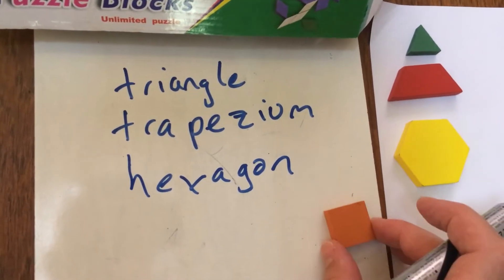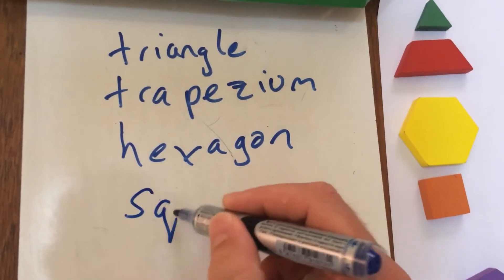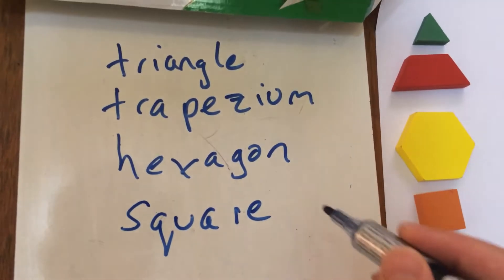Then we've got our square, a four-sided shape with four equal sides and right-angle corners.